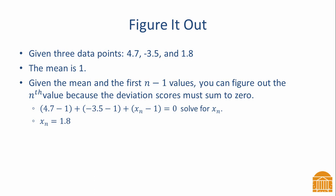Once I have the mean, I only need two of those values, and I can figure out the third value, and that's because the deviation scores must sum to zero. Remember, a deviation score is a value minus the mean, and the sum of the deviation scores must be zero.